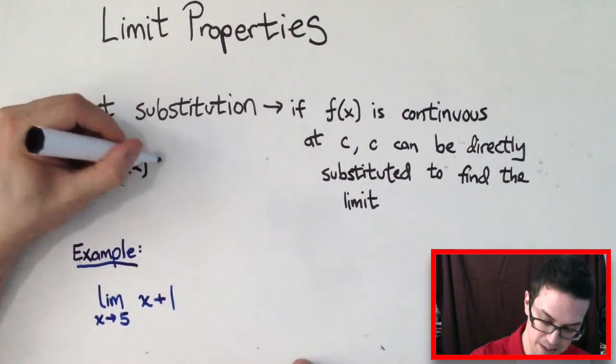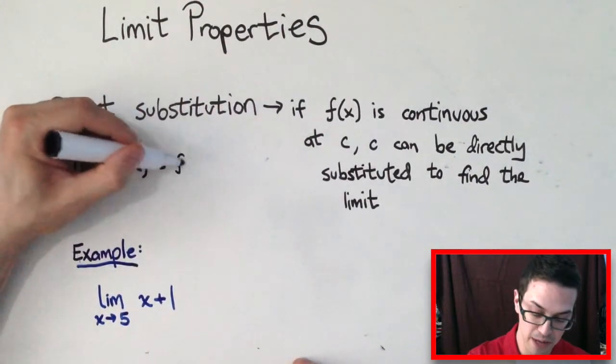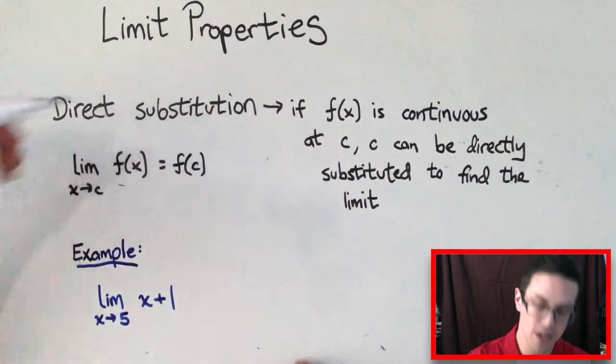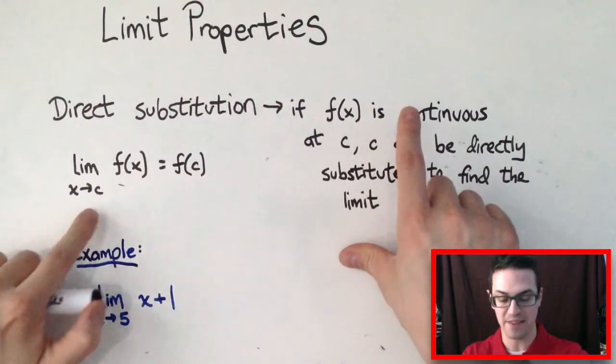So another way of writing this is the limit of F of X as X gets closer to C could just be equal to F of C. But this only happens if the function is continuous at this value C.